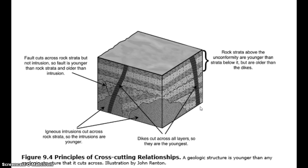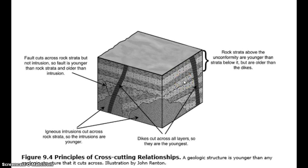Then I see that there are four horizontal layers at the top of the figure. According to the principle of superposition, which says that younger rocks are deposited over older rocks, the rock unit at the top is the youngest and the three below are successively older. So this would be the youngest, and this would be the oldest of these four rock units.